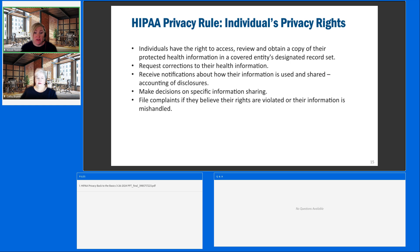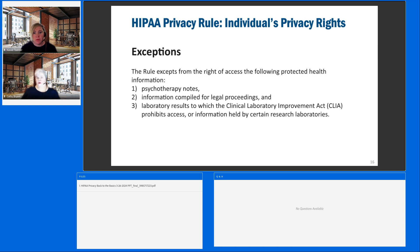Individuals can make decisions on specific information sharing, and they can also file complaints if they believe their rights are violated or their information is mishandled. This is very easy to do — it's a website or a phone call where these complaints can be made pretty straightforwardly. There are a few exceptions for individual privacy rights: those are around psychotherapy notes, information compiled for legal proceedings, CLIA laboratory results, and information held for certain research laboratories. But it's a small group of exceptions — by and large, the vast majority of the record and the rights are going to be in favor of the individual patient or their representative.